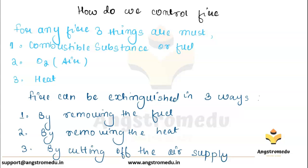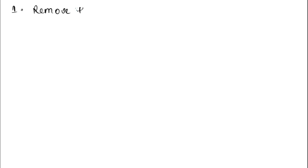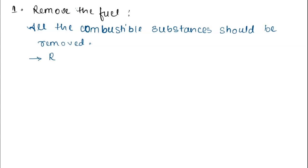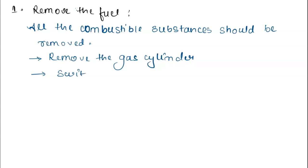Let us study these three ways one by one. First is remove the fuel. To extinguish or to control fire, when fire starts in a room, all the combustible substances should be removed, because if there are no combustible substances, then fire cannot spread. We can do this by removing the gas cylinder and by switching off the electricity supply.